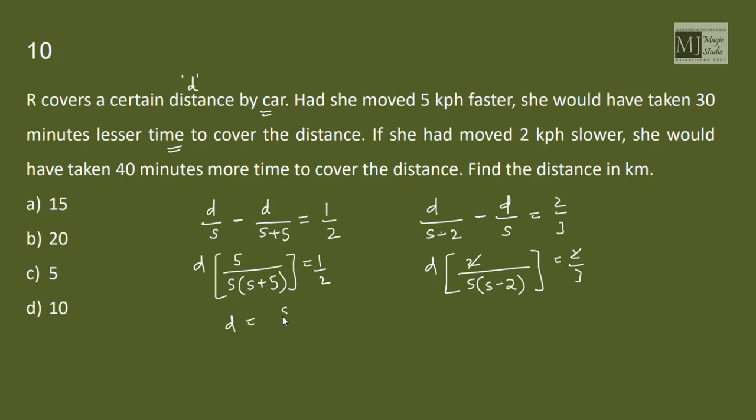So from here we have d equals s square plus 5s by 10 and here we have d equals s square minus 2s by 3. We can equate this and we'll get 3s square plus 15s equals 10s square minus 20s, so 7s square is 35s, s equals 5 kilometer per hour. Find the distance, now we can use it in any one of this, so distance is 25 minus 10 by 3 that is 15 by 3 or 5 kilometer.